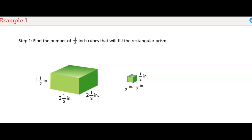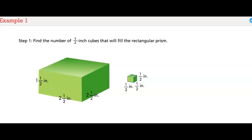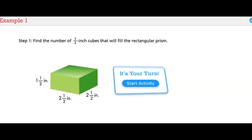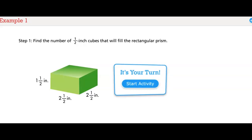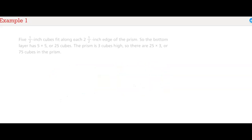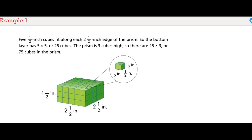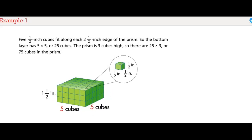Step 1: Find the number of 1/2-inch cubes that will fill the rectangular prism. Five 1/2-inch cubes fit along each 2-and-1/2-inch edge of the prism, so the bottom layer has 5 times 5, or 25 cubes. The prism is 3 cubes high, so there are 25 times 3, or 75 cubes in the prism.